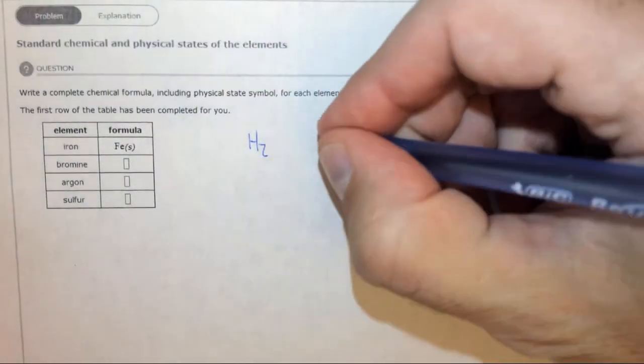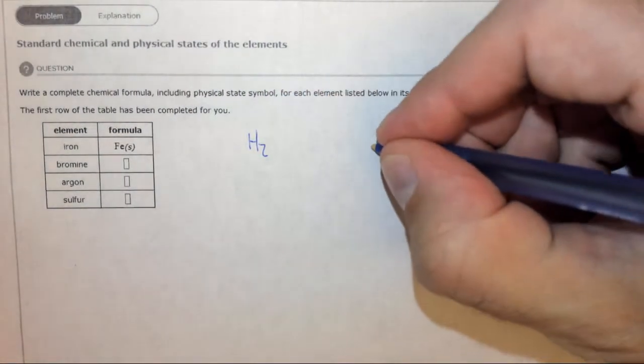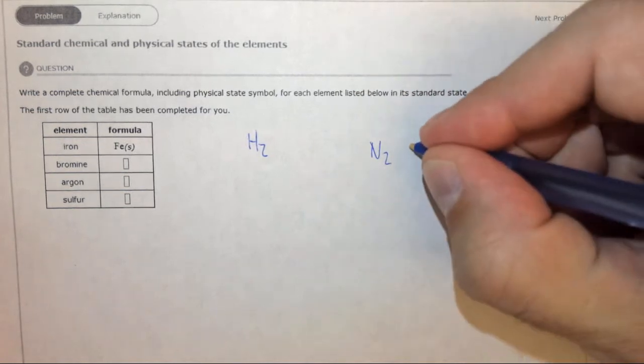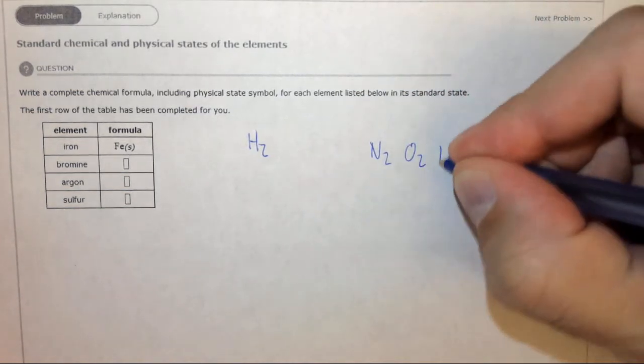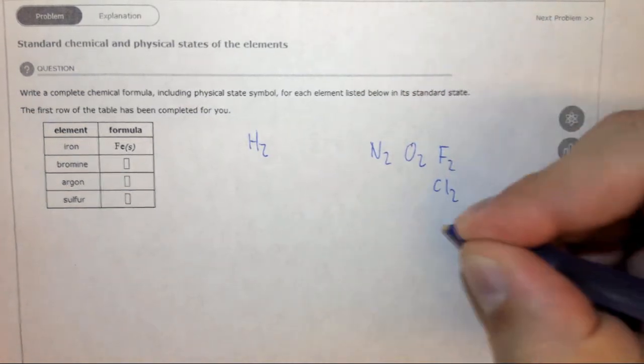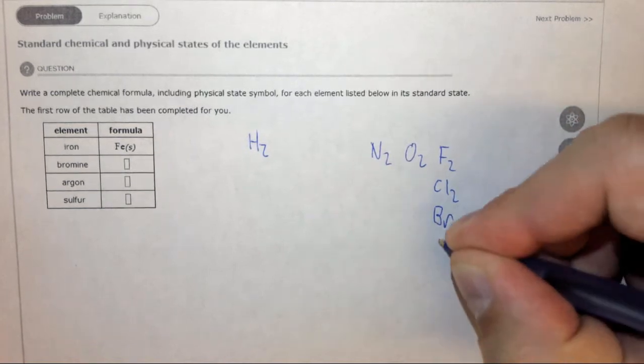We have hydrogen, and then if you look at it on a periodic table, nitrogen is here followed by oxygen, fluorine, chlorine, bromine, and iodine.